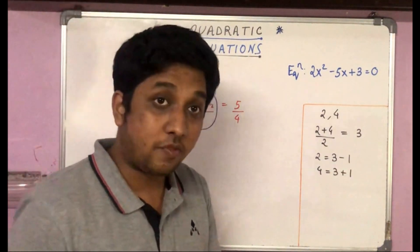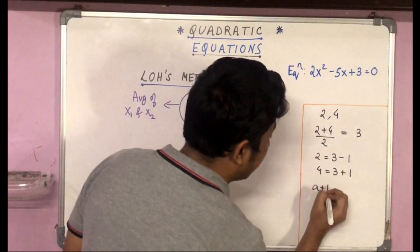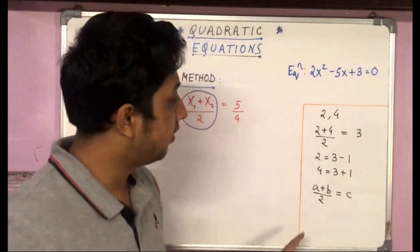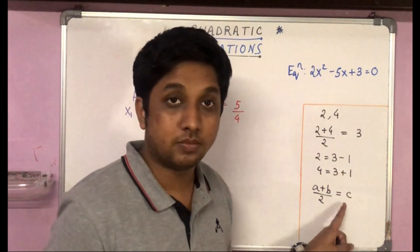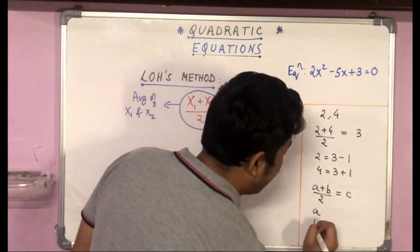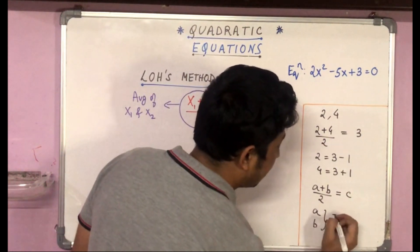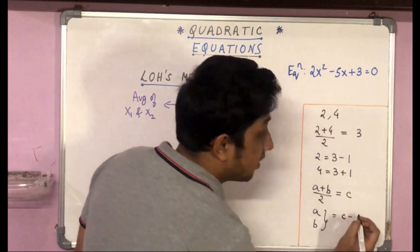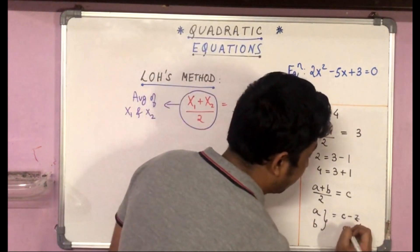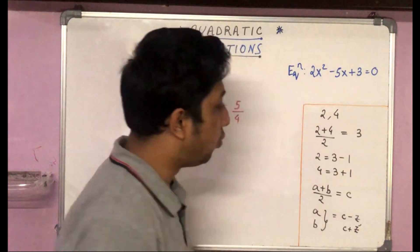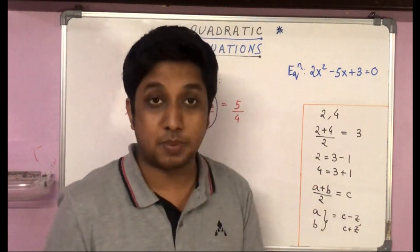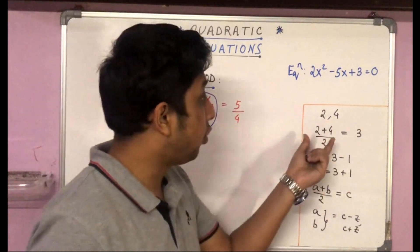This means that if we have two numbers a and b whose average is c — so (a + b)/2 = c — then we can express a and b as c − z and c + z, where z is a fixed number. One of the two numbers would be c − z and the other would be c + z.